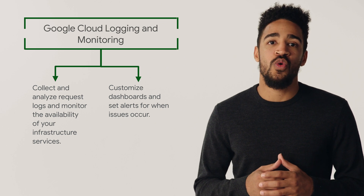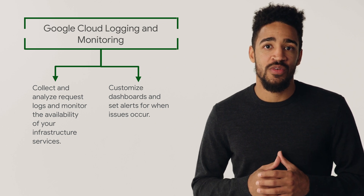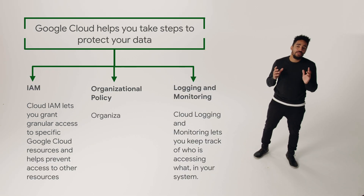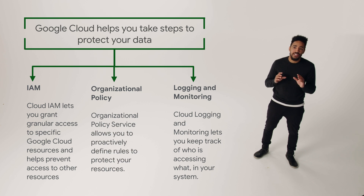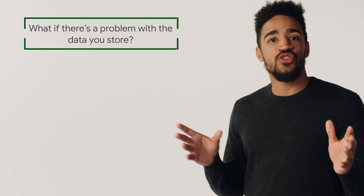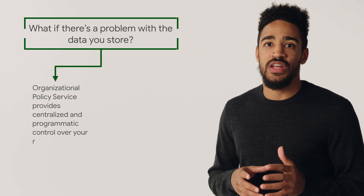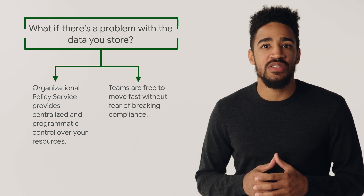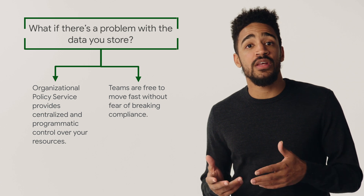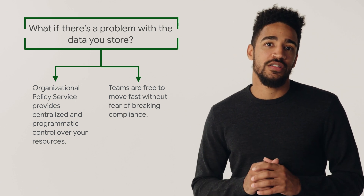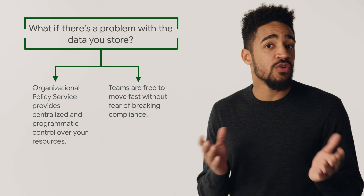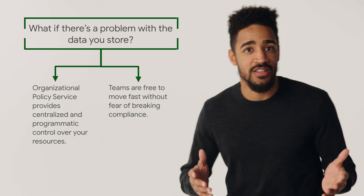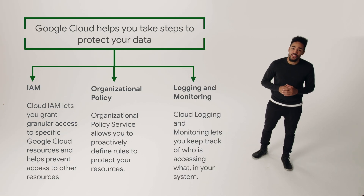For example, you could set up notifications to warn you of suspicious activity in your system, or to notify you when access to a resource is taking too long. But really, it's good to be proactive as much as possible and set up organizational policy. An organizational policy is a centralized configuration of restrictions on how your organization's resources can be used. They define guardrails for your development teams to stay within compliance boundaries and help teams move quickly without worrying about breaking compliance. For example, you could set a policy to require all newly created, restarted, or updated Cloud SQL instances to use customer-managed encryption keys. All of these tools, and more, work together to protect data.